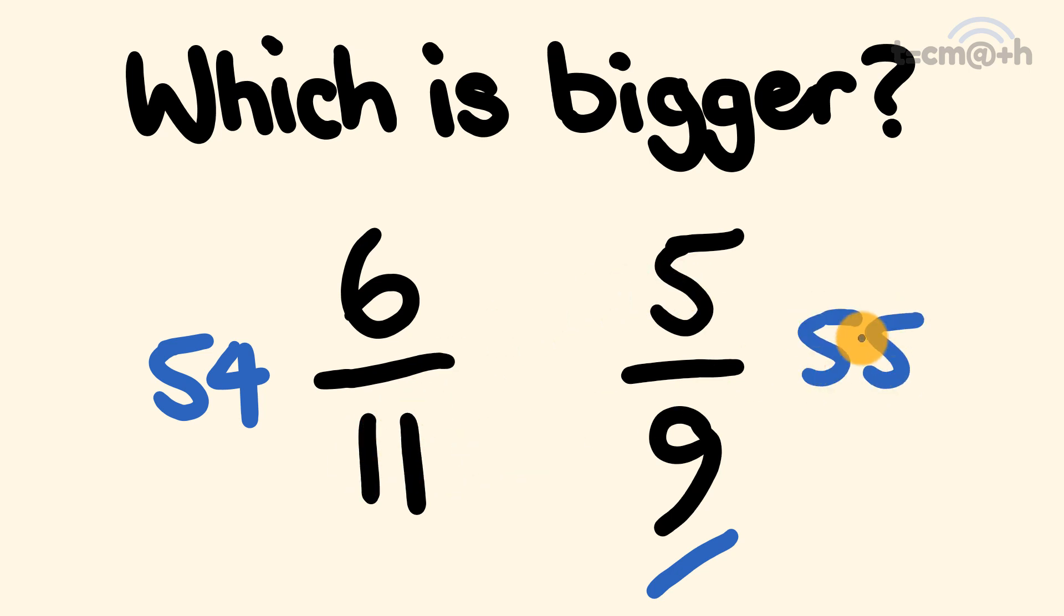Now it's just a simple matter of comparing which one got the bigger result. As you can see, 55 is bigger than 54, which means that 5 over 9 is larger than 6 over 11.